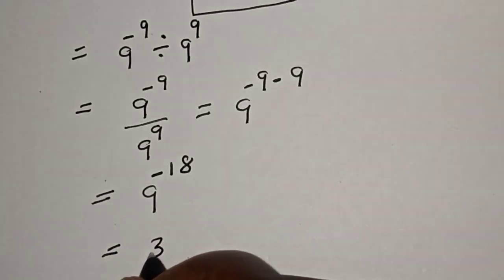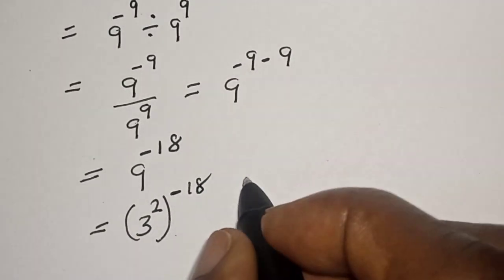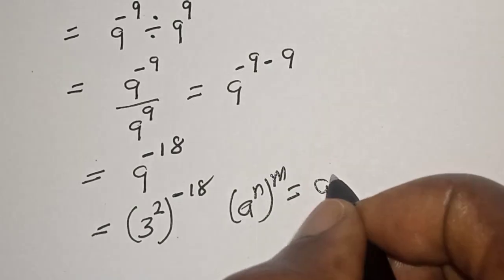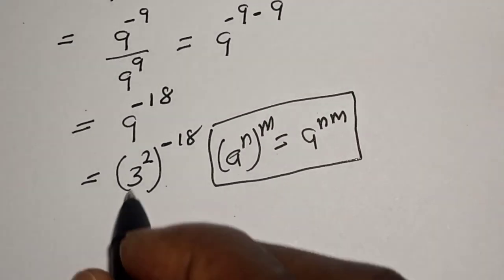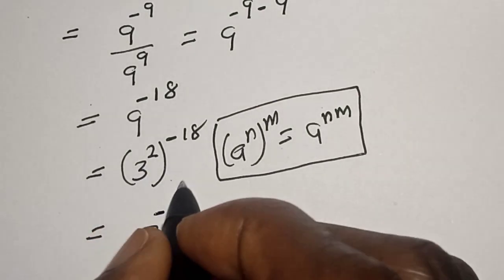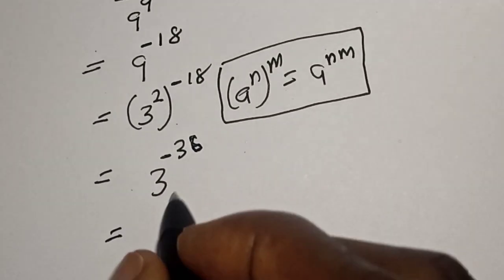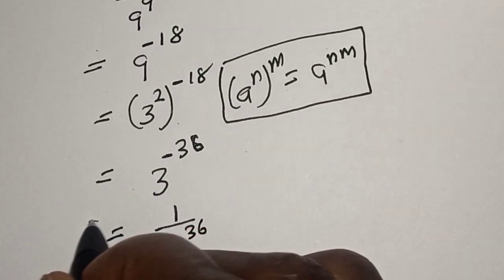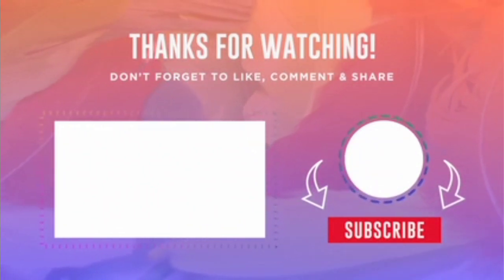This can be written as 3 squared raised to power minus 18. Using the rule that a raised to power n raised to power m equals a raised to power m times n, we have 3 raised to power 2 times minus 18, which is minus 36. This is equal to 1 over 3 raised to power 36, and this is the final answer. If you enjoyed the class, please don't forget to like, share, comment, and subscribe. Thank you.